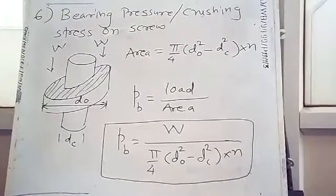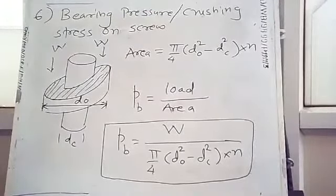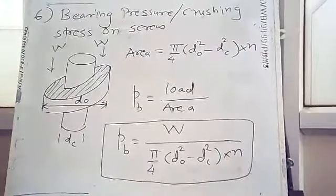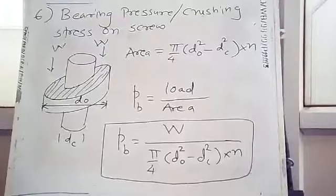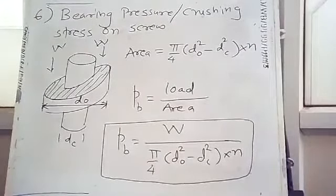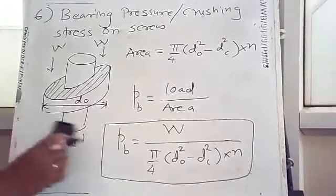We will complete stresses in the screw with one more equation, though it is not expected in the exam — just for information. This is the seventh and last equation: buckling or crippling of the screw. The screw may buckle under high load, similar to column buckling studied in strength of materials.